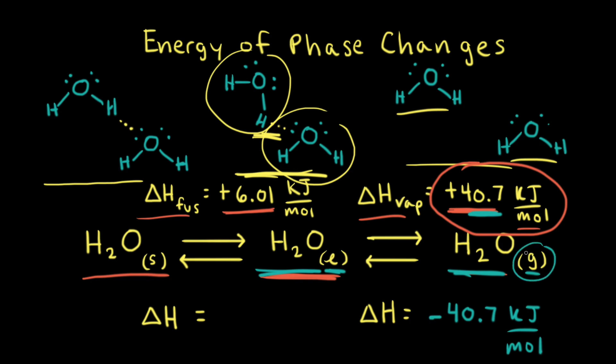Going from the gaseous state to the liquid state is called condensation. So we could call this value of negative 40.7 kilojoules per mole, the heat of condensation.